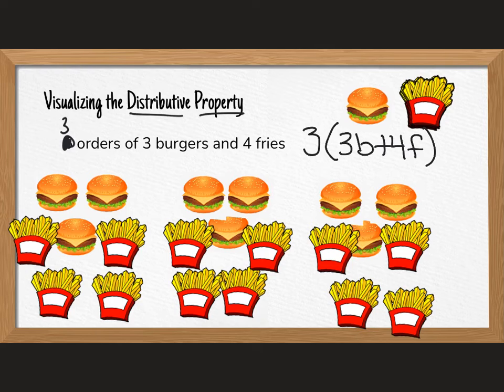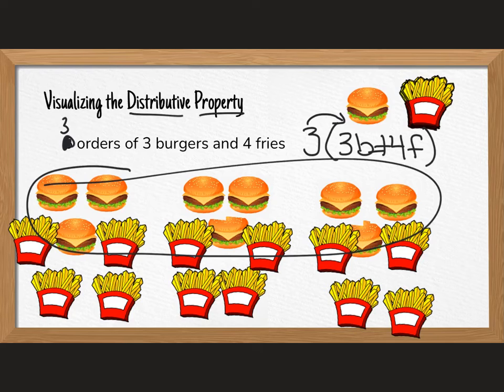Okay, so in math, we see this - there are nine burgers and there's 12 fries. An easy way to look at this in math is using the distributive property. We have three orders of three burgers plus four fries. And so then you could solve it, and the distributive property is saying that I will multiply the number on the outside to everything on the inside. If I have three groups of three burgers, you have nine burgers. And if I have three groups of four french fries, you have 12 french fries.